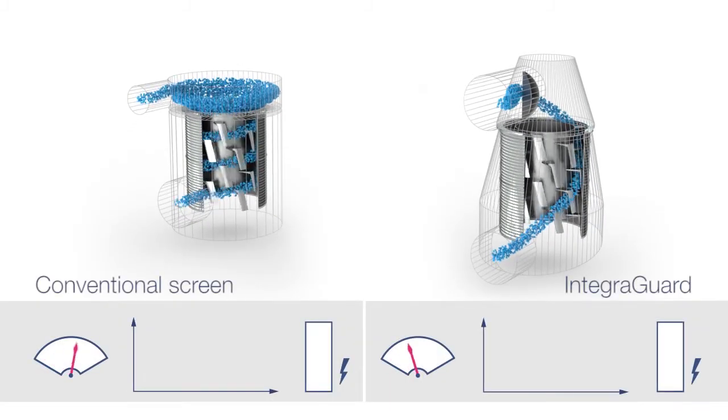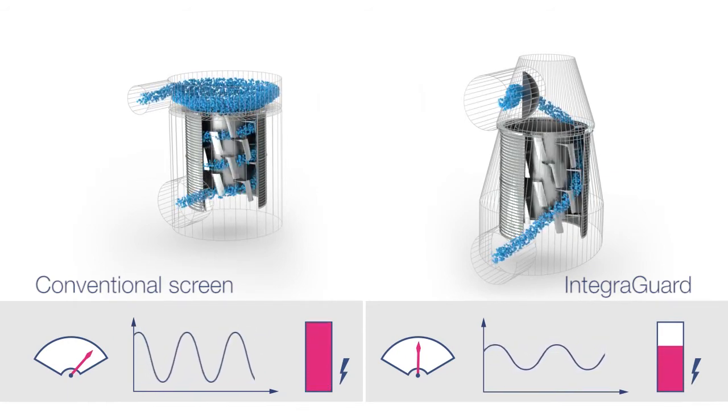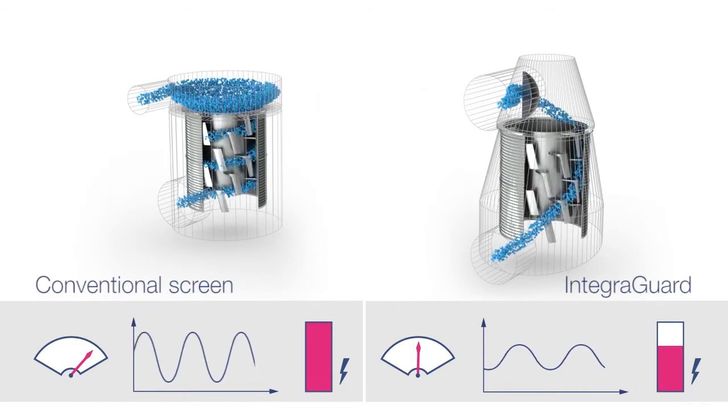The lower rotor speed enables both the level of pulsation and power consumption to be reduced while maintaining the same screen cleaning capacity.